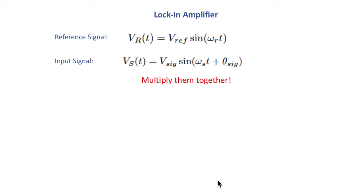So then the lock-in amplifier takes them and it multiplies them together to create something called the phase sensitive detector output. So it's multiplying them and they have different phases.